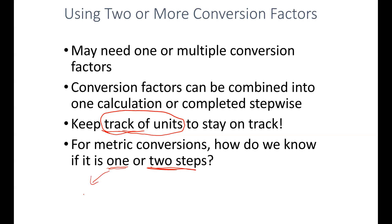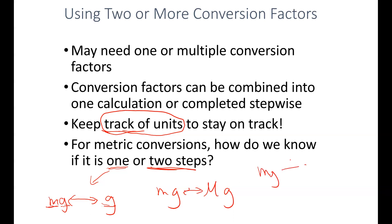For one-step conversions, that's typically a compound unit — like milligrams to the base unit grams, or from grams to milligrams. You're talking about a unit that has one prefix and then the base unit to just the base unit. A two-step conversion is when we're looking at two different compound units, like milligrams and micrograms, or milligrams and kilograms — different prefixes in front of the same base unit. These types of conversions require two steps.